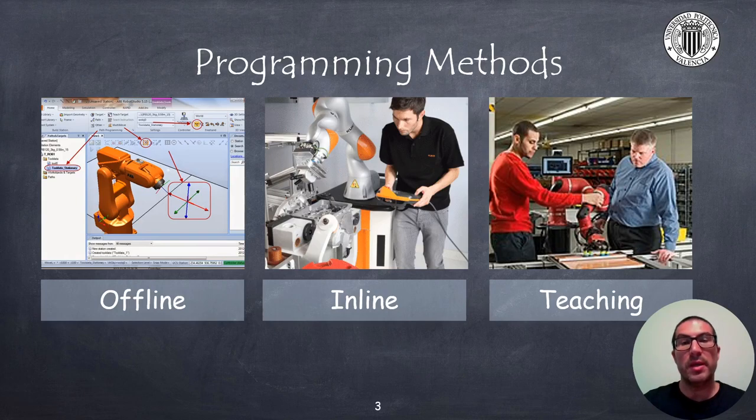On the other hand, in inline programming an engineer manually moves the robot using the robot control path and records positions of interest and configures the corresponding motion instructions to achieve the required task. So at the end of all this process, the robot will have a code that will be able to reproduce as many times as required.